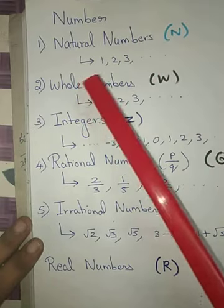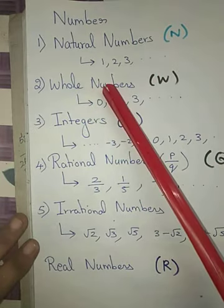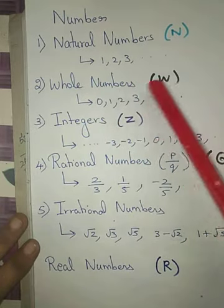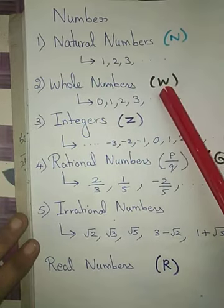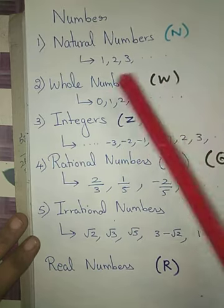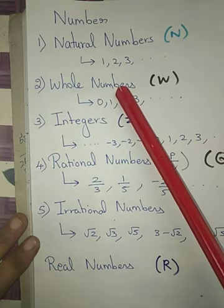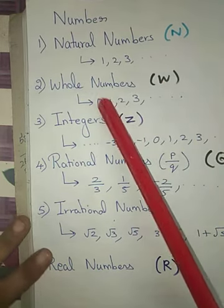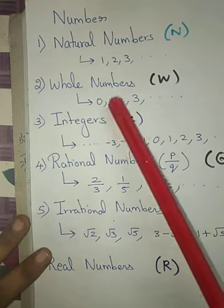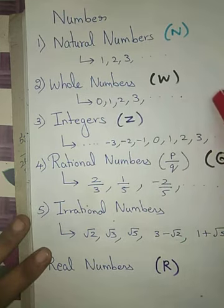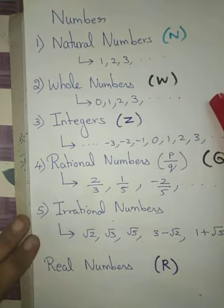The next type of numbers is whole numbers, which are denoted by the letter W. Whole numbers begin with the number 0, so whole numbers are 0, 1, 2, 3 and so on.